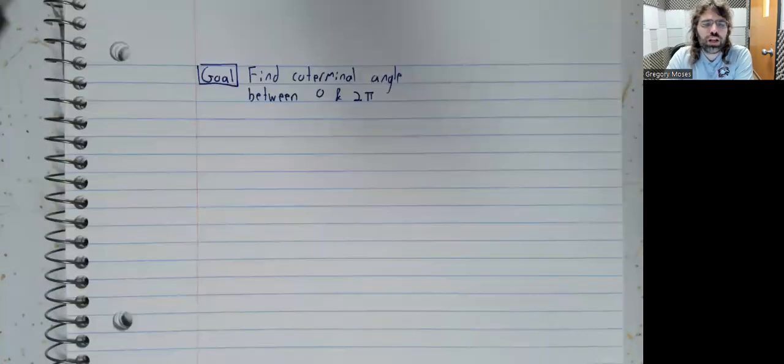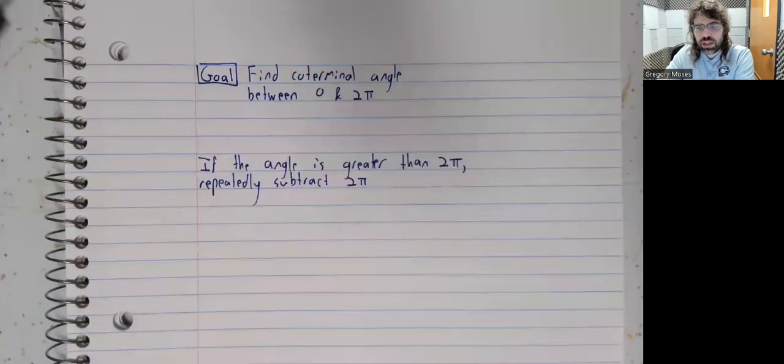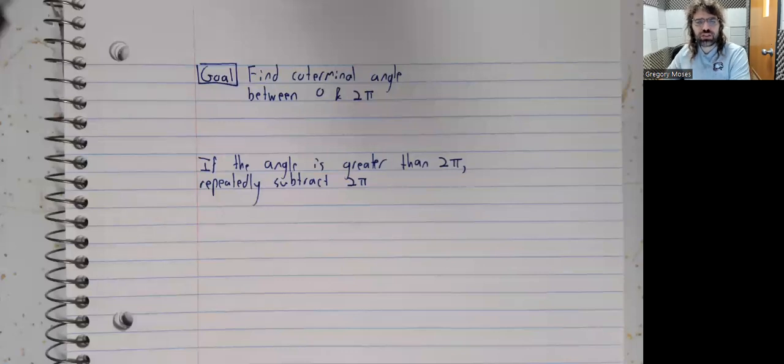If we're working with radians, our goal is going to be modified in a natural way. Instead of wanting an angle between zero and 360, we would want an angle between zero and 2 pi.